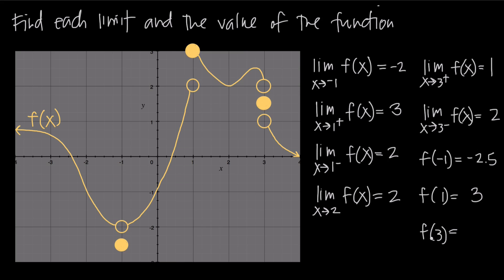Finally, f of 3: coming to x equals 3, even though the limit from the left is 2 and the limit from the right is 1, the value of the function is neither of those. It's the shaded circle at about y equals 1.5, so the value of the function there is actually 1.5.